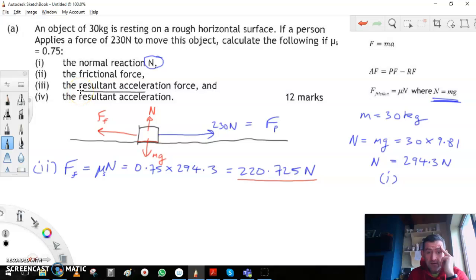Now we're going to look at part three, the resultant acceleration force. Here we go, this is the resultant acceleration force formula here. The resultant acceleration force equals the pulling force minus the resistance or frictional force. So that's simply equal to the pulling force we worked out.